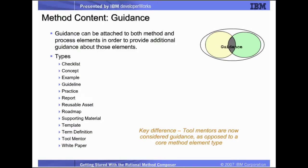As much guidance as is needed can be attached to any method content element or process element. It's there to help explain the definition of the element it's attached to, and it could be any number of things — a checklist, a concept definition, examples, guidelines, white papers, templates, or any other type of information that would be helpful to the user.